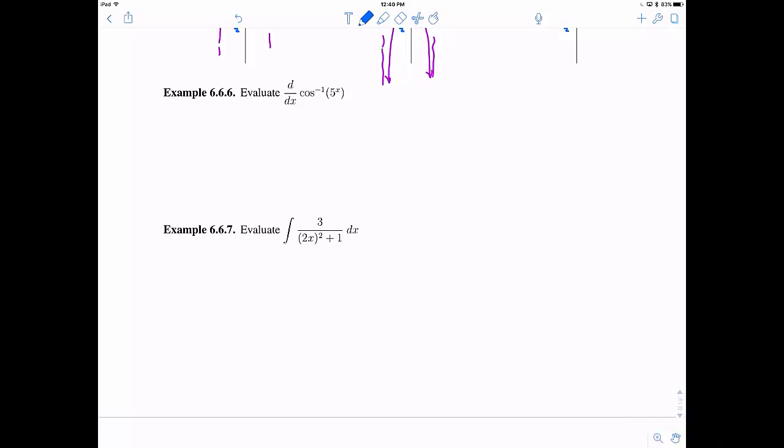All right so here we have a few relatively easier questions. The first one, take a derivative of cosine inverse with a little bit of chain rule thrown in there. So the derivative of cosine inverse is supposed to be negative 1 divided by square root of 1 minus, and then the quantity whatever's inside, so 5 to the x, that's squared, times the chain rule says we need to take the derivative of 5 to the x. So that's going to be 5 to the x times the natural log of 5.